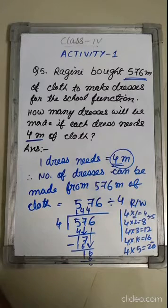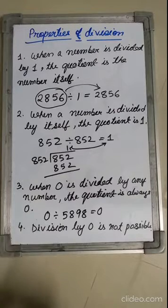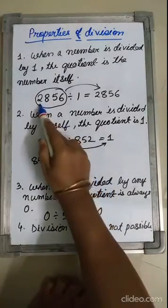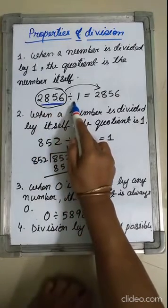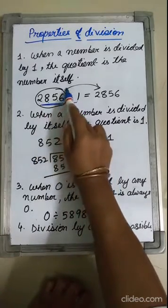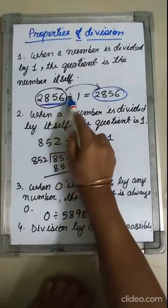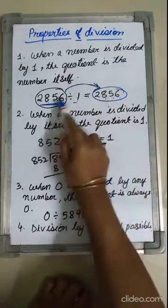So, like this you have to solve word problems. Now let us check some properties of division. Property 1: when a number is divided by 1, the result is the number itself. For example, 2856 divided by 1 equals 2856 — this number only.